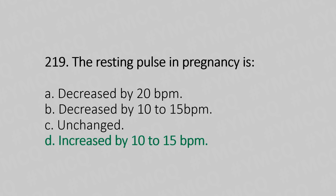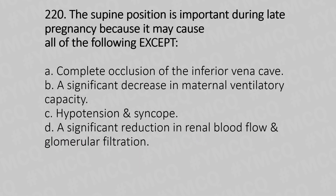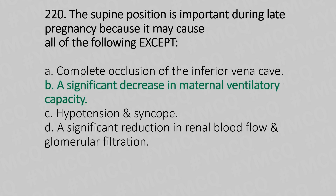Question 220: The supine position is important during late pregnancy because it may cause all of the following except — Option A: Complete occlusion of the inferior vena cava. Option B: A significant decrease in the maternal ventilatory capacity. Option C: Hypotension and syncope. Option D: A significant reduction in renal blood flow and glomerular filtration. The answer is Option B: A significant decrease in the maternal ventilatory capacity.